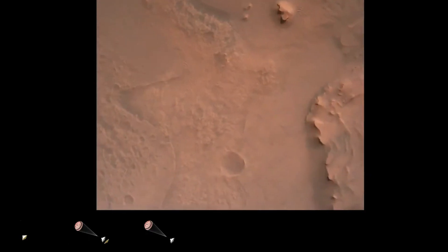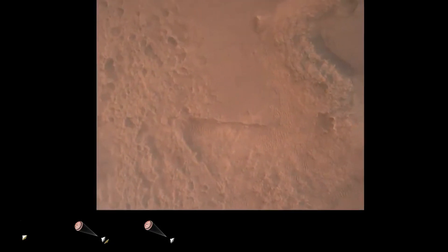Perseverance is continuing to descend on the parachute. We are coming upon the initialization of terrain relative navigation and subsequently the priming of the landing engines. Our current velocity is about 90 meters per second at an altitude of 4.2 kilometers.